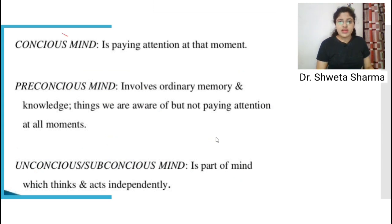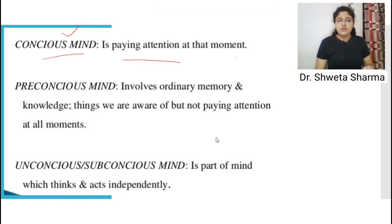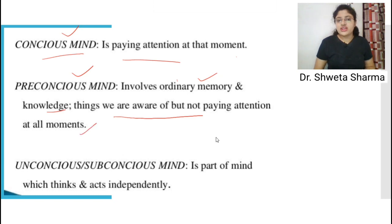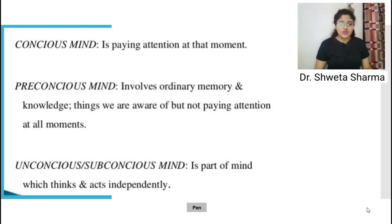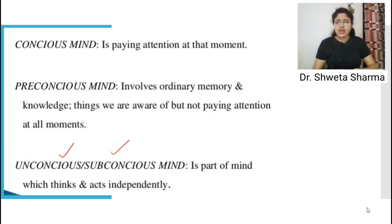In the topographical model, the human mind is divided into three parts: conscious, pre-conscious, and unconscious. The conscious mind is what we are paying attention to at that moment. The pre-conscious mind involves ordinary memories and knowledge — things we are aware of but not paying attention to at that moment. The unconscious mind is where we are doing something else and thinking something else.